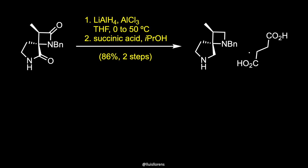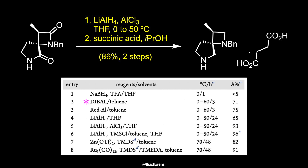The carbonyl groups within the spirolactam are reduced with lithium aluminum hydride and aluminum chloride in THF. Reduction using DIBAL or lithium aluminum hydride alone afforded the product in moderate yields but was also accompanied by beta-lactam fission. Under the selected conditions, the beta-lactam was completely reduced at 0°C by lithium aluminum hydride in the presence of TMS chloride, and then the remaining gamma-lactam was fully reduced at 50°C with addition of additional lithium aluminum hydride.